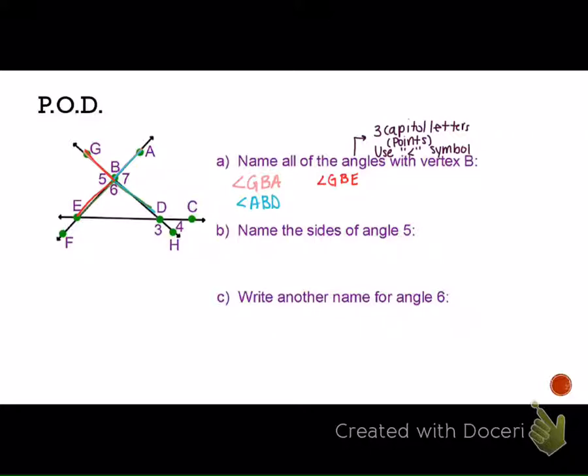CDH doesn't have a vertex of B. We want this vertex here. So how would we get that vertex with these three letters? Angle EBA. Good. Do you guys notice that there's letters or numbers in the middle? You can use a number that's in the center of an angle if it is the only angle there.